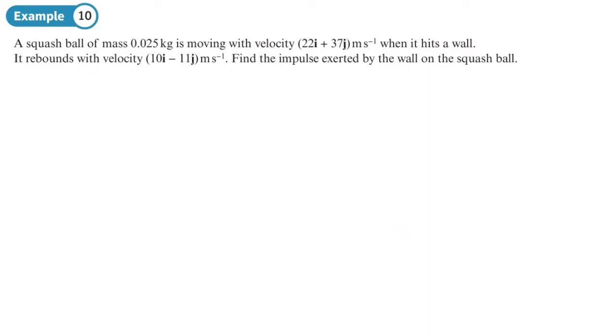A squash ball of mass 0.025 kg is moving with velocity 22i plus 37j when it hits a wall. It rebounds with velocity 10i minus 11j. Find the impulse exerted by the wall on the squash ball. Now I know these things are moving at angles, but I'm going to draw a diagram just to help visualize what's going on. So there's my wall. This makes it look like it's moving in a straight line, but it's not. I just want to represent it this way. So 22i plus 37j as it's moving towards the wall, and then when it rebounds, it's rebounding at 10i minus 11j.